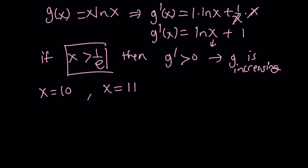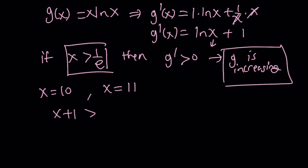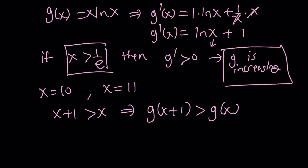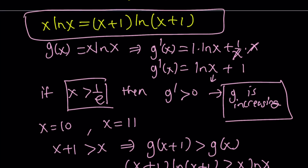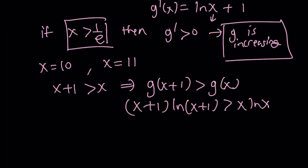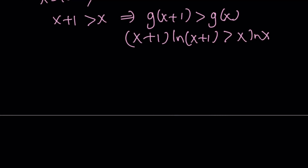Since g is an increasing function on that interval, and since x+1 is greater than x, this implies that g(x+1) is greater than g(x). By our definition of g, this means (x+1)·ln(x+1) is greater than x·ln(x). Therefore these two values will never be equal to each other on our interval, which means there is no maxima or minima on our interval for f.